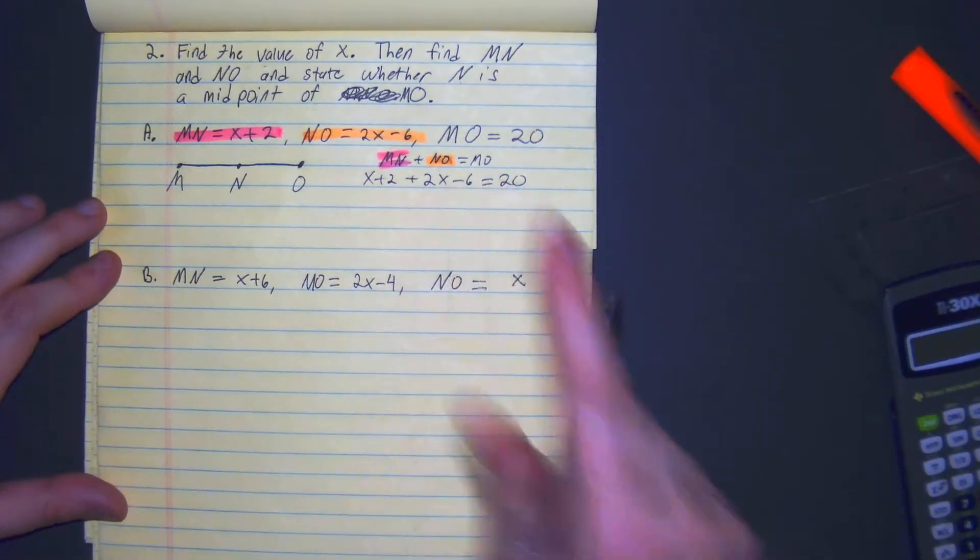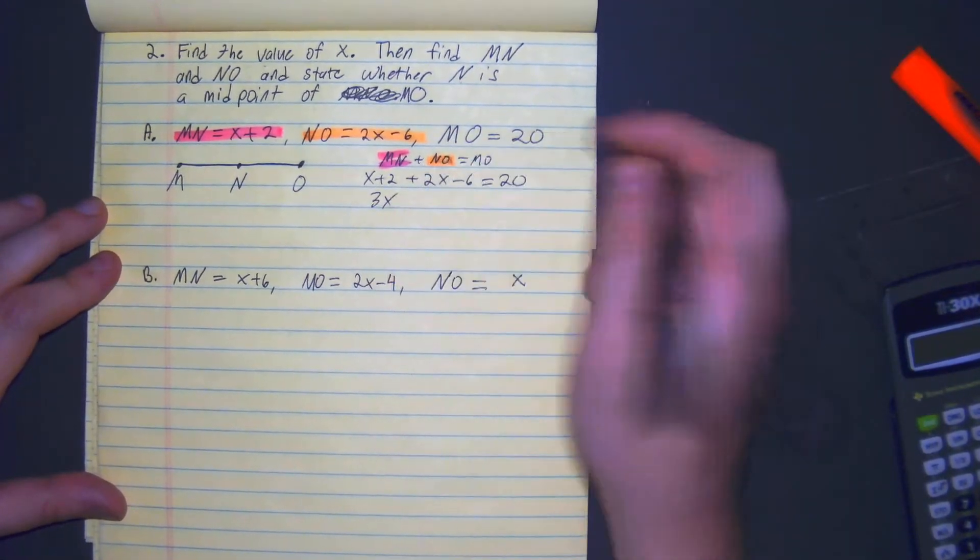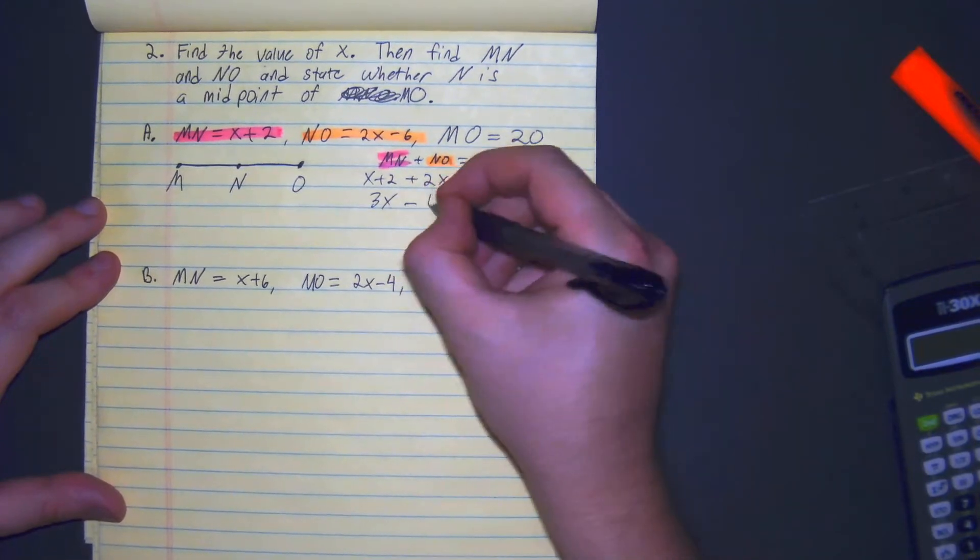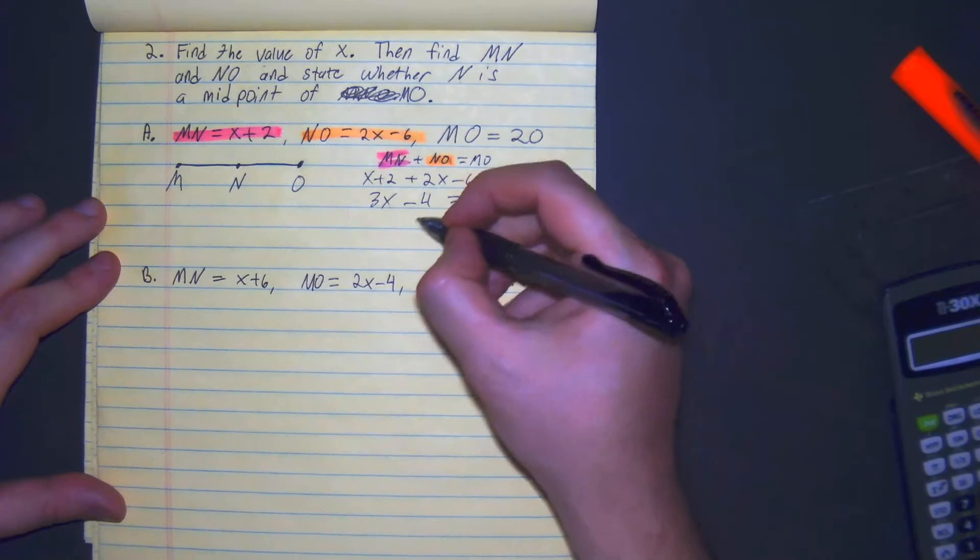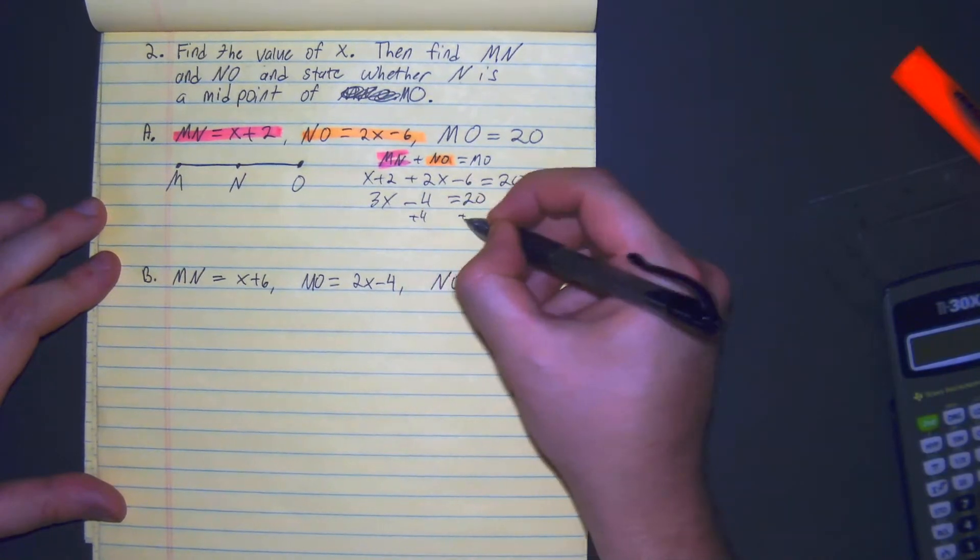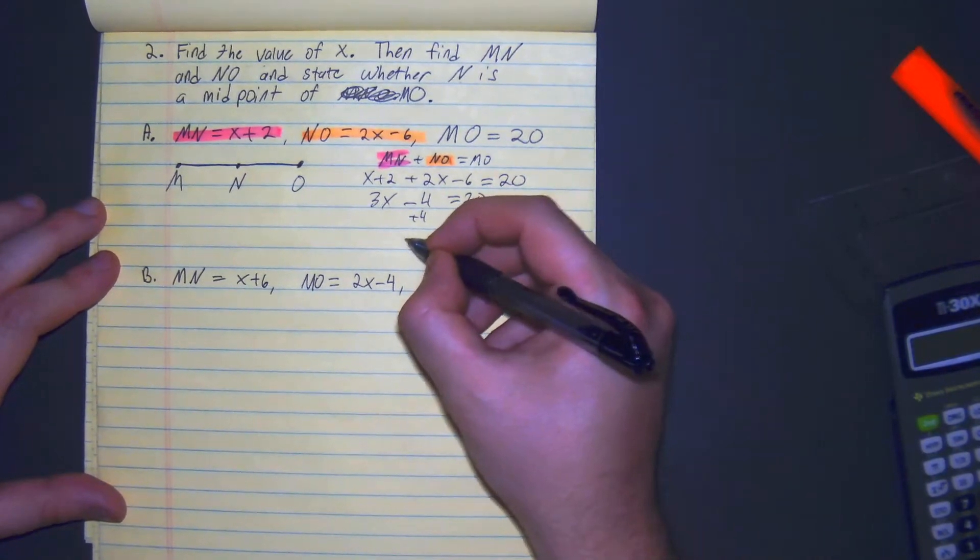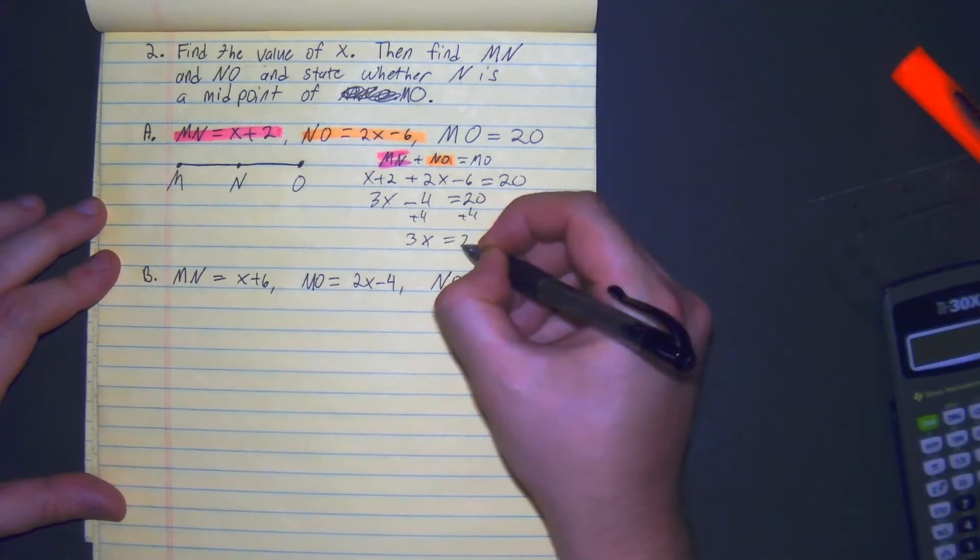Combine like terms: x plus 2x is 3x, 2 minus 6 is minus 4, so 3x minus 4 equals 20. Add 4 to both sides. You get 3x equals 24.